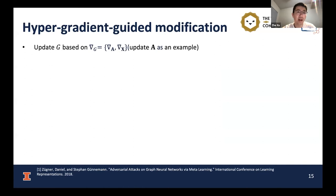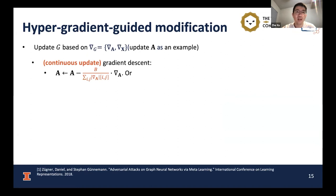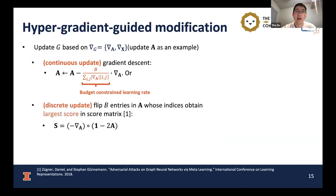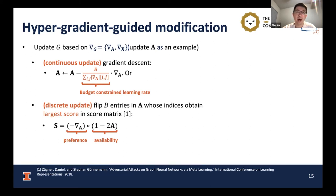Given the computed hypergradient, our method supports modification of both graph topology and node features. Using graph topology as an example, we can directly use gradient descent with respect to the adjacency matrix, where the learning rate is bounded by the sanitation budget. Alternatively, we can adopt a discrete update, flipping several entries of the adjacency matrix guided by a score matrix composed of two parts: a preference matrix and an availability matrix. This score matrix was first introduced by adversarial attack works.